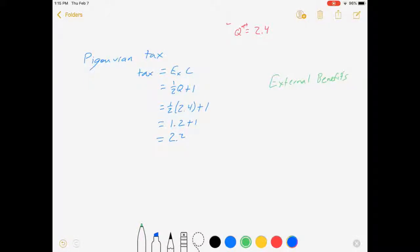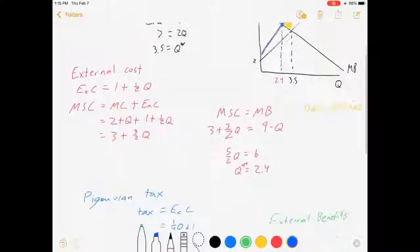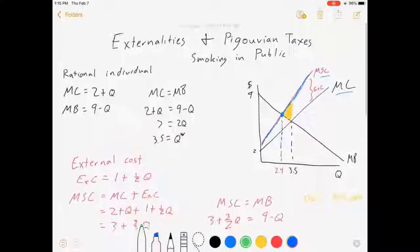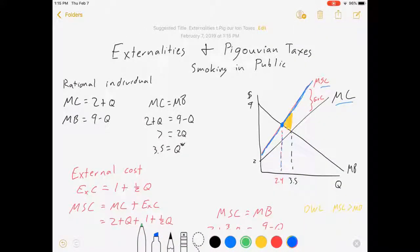And a Pigouvian subsidy would be set equal to the external benefit to make them internalize the extra benefits of the behavior. So, basically the same thing. You can just flip a bit of the math over and you'll be fine. I hope this video was helpful to you. If not, too bad. Good luck everybody. Happy econ-ing.